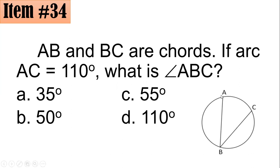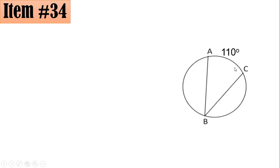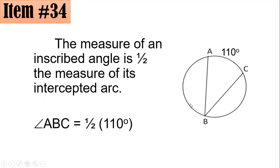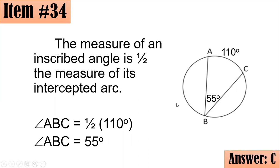Arc AC is 110 degrees, and these two chords form an inscribed angle. The measure of an inscribed angle is one-half the measure of its intercepted arc. Arc AC is the intercepted arc of inscribed angle ABC. Thus, the measure of this angle is one-half of 110 degrees, or 55 degrees, letter C.